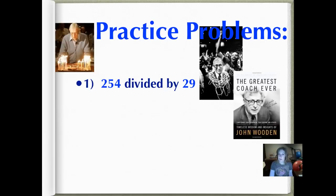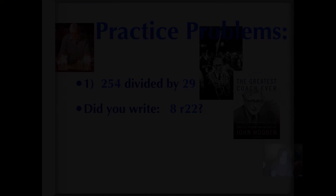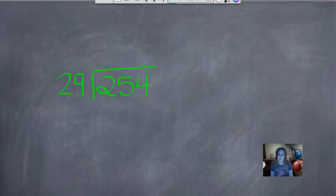254 divided by 29. Use the standard algorithm to divide them and then check them with multiplication. Push play when you're ready. Did you write 8 remainder 22? This front-end estimation may be new for you, so let's see how we did that. So, 254 divided by 29. We know that 29 won't go into 2, so we can put an X there. And it won't go into 25, so we can put an X there.